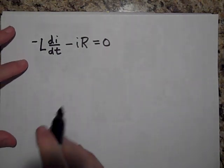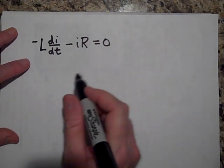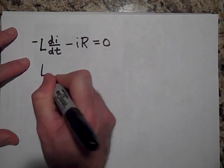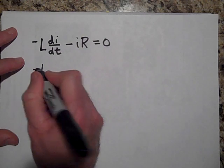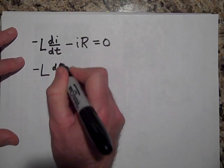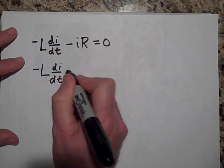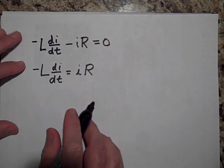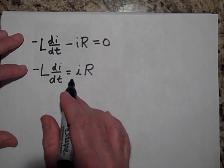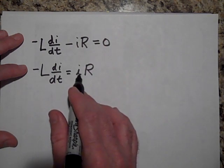Okay, so I'm going to bring the IR on the other side. This is just Kirchhoff's loop rule. Bringing that IR on the other side, I'm going to get the following.